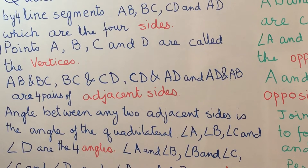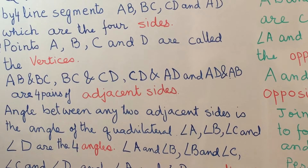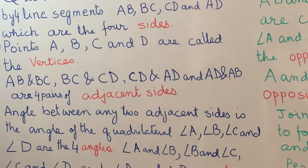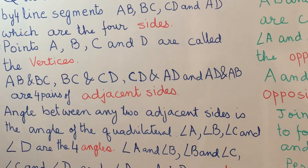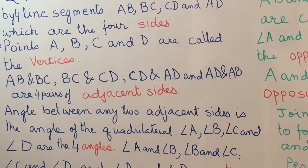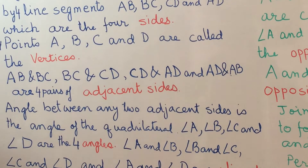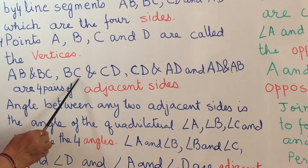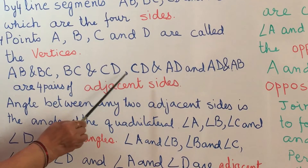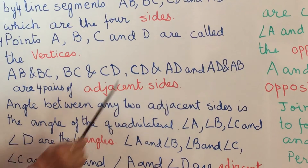In the same way, BC and CD are next to each other; CD and AD are next to each other; and AD and AB are next to each other. So we have four pairs of adjacent sides in the quadrilateral: AB and BC, BC and CD, CD and AD, and AD and AB.